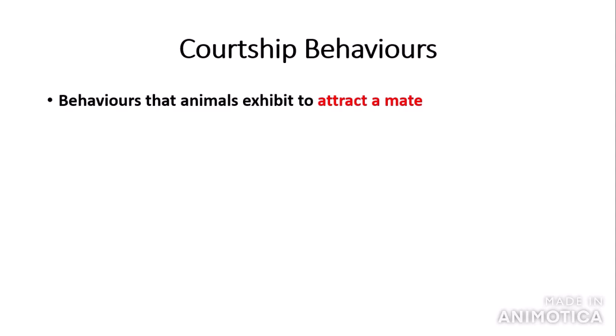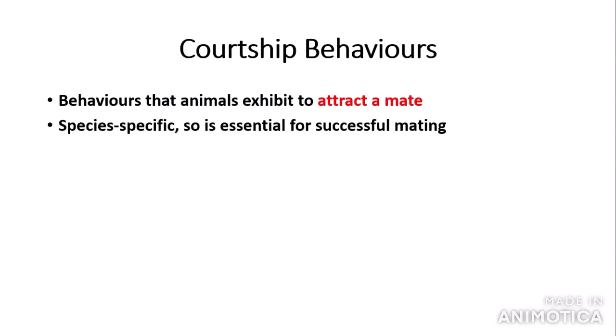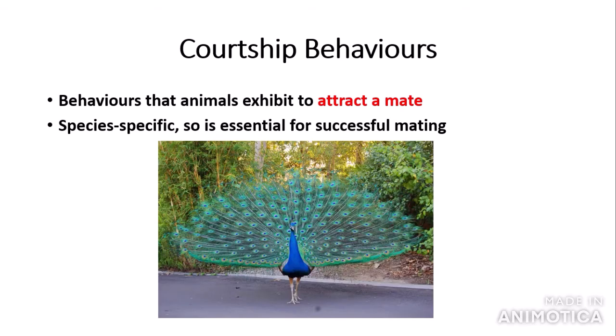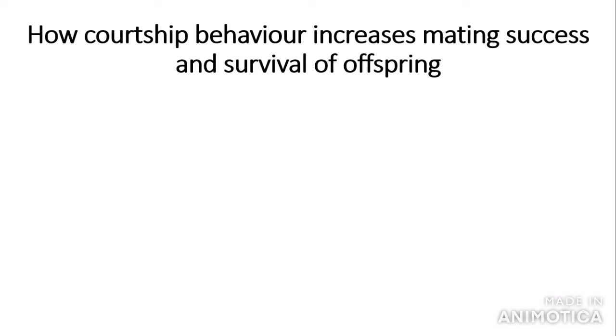So how do organisms recognize individuals of their own species? They do this through a series of behaviors called courtship behaviors. Courtship behaviors are behaviors that animals exhibit to attract and mate; this is species-specific, so it's essential for successful mating. The more similar a courtship sequence is to a particular species, the more likely they are highly related. For example, a male peacock puts on a display for the female in order to attract it.